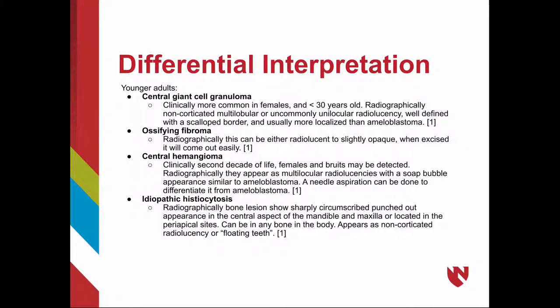For younger adults, the differential can include central giant cell granuloma, which is clinically more common in females under age 30. Radiographically, it is non-corticated, multilobular, or uncommonly unilocular, but radiolucent, well-defined with a scalloped border, and usually more localized than an ameloblastoma. An ossifying fibroma can be either lucent or slightly opaque, and when excised it comes out easily as one mass.